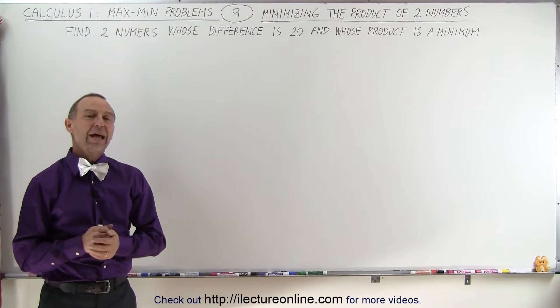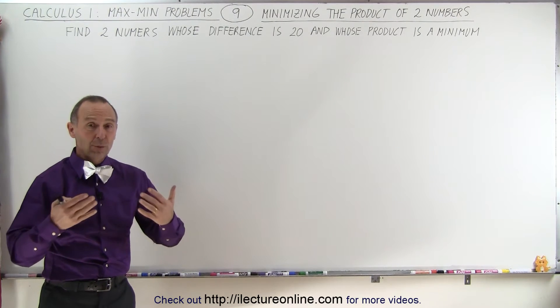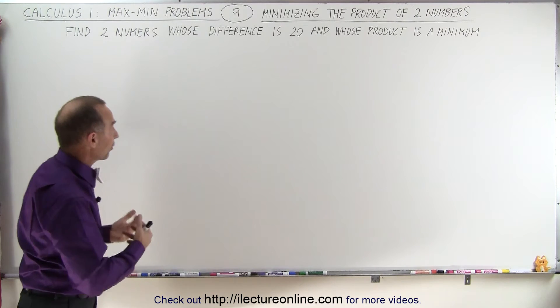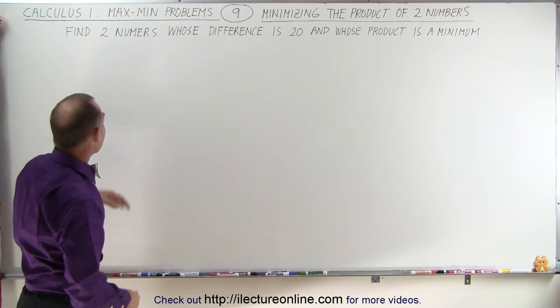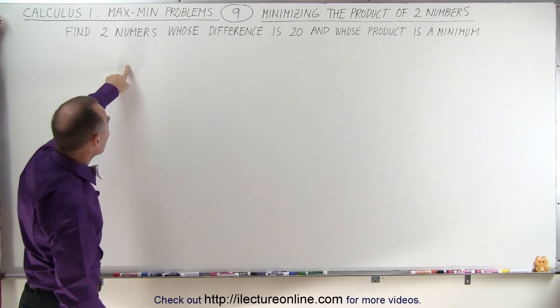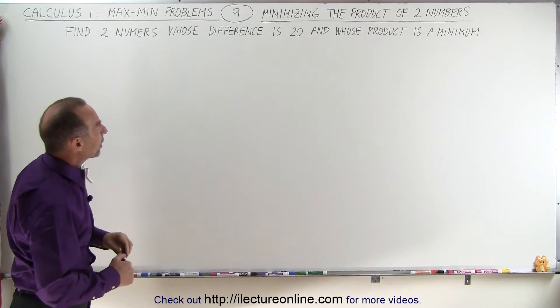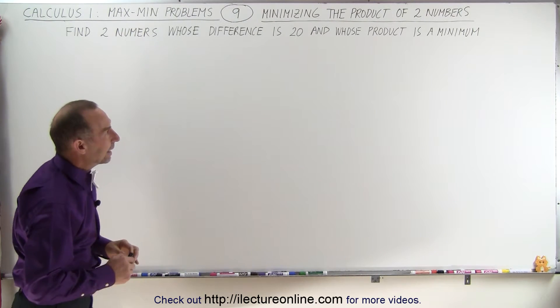Welcome to ElectronLine, and now an easy problem to show us how to use the various steps to solve a maximum-minimum problem. It says here to find two numbers whose difference is 20 and whose product is a minimum.